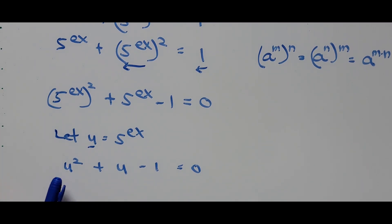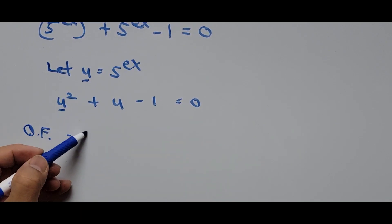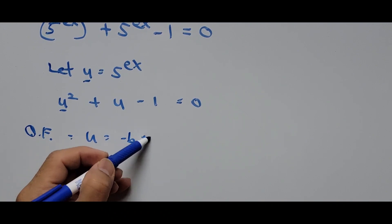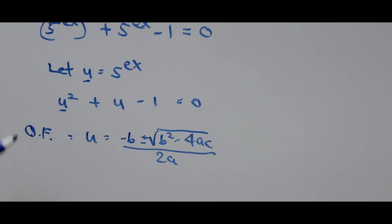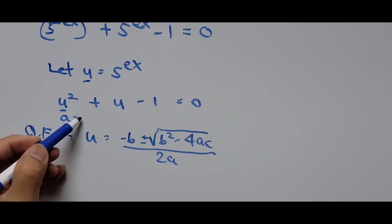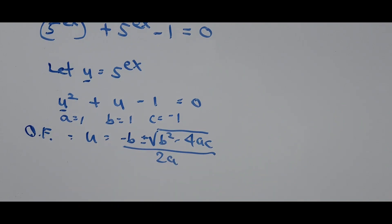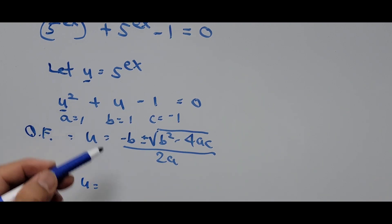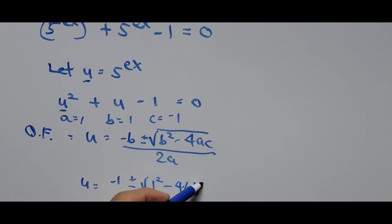To solve for u we use the quadratic formula: u equals negative b plus or minus the square root of b squared minus 4ac, all over 2a. Our equation is in standard form, so a equals 1, b equals 1, and c equals negative 1. Substituting: u equals negative 1 plus or minus the square root of 1 squared minus 4 times 1 times negative 1, all over 2 times 1.